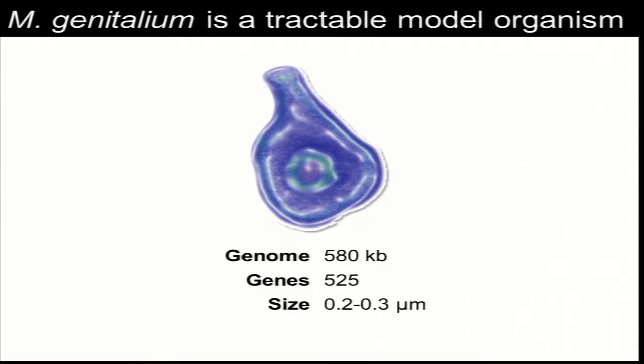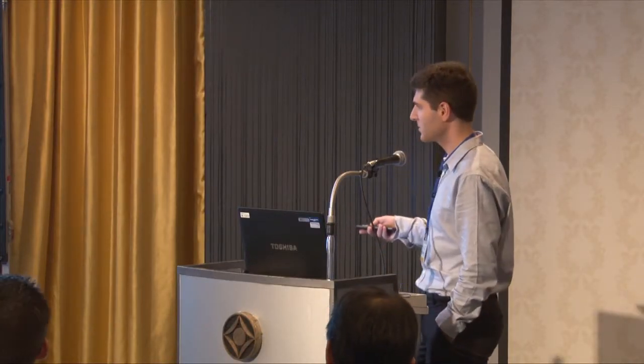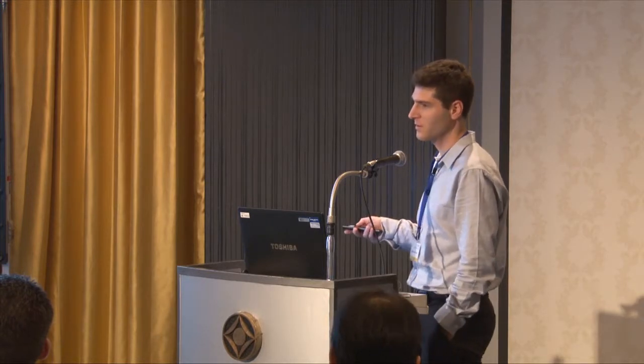Akira already introduced Mycoplasma genitalium. Much of my work and our field has focused on this bacterium because it has a very small number of genes. It has the smallest genome among all known freely living organisms with just 525 genes. It's also physically small so it has a small number of molecules. If you want to keep track of individual molecules in your simulation, this is a system which simply has a small number of molecules.